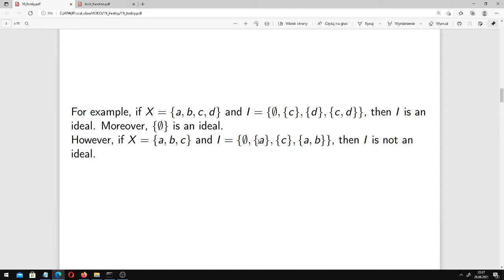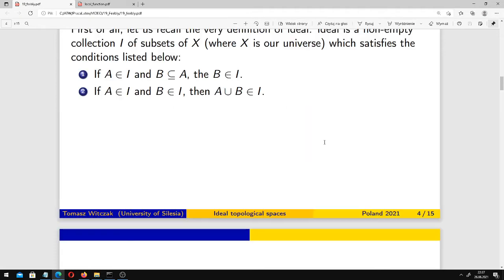But in case of this universe, for example A, B, C, this collection here (empty set, singleton of A, singleton of C, and AB) is not an ideal. For example, take the singletons of A and C respectively. The union A, C is not in this collection, so this condition is not satisfied.